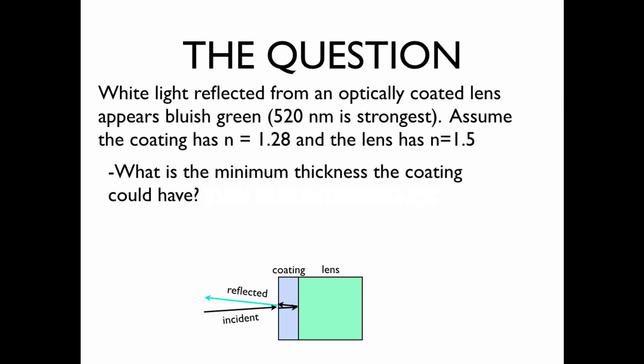So here what's happening is that light is incident on the coating lens combination. Some of the light is reflected right away. Some of the light enters the coating, reflects off the lens coating boundary, and then passes out. There's also some light that goes through the coating and goes through the lens, but this is not the light we're interested in. We're just interested in the light that is reflected off the coating and the lens.